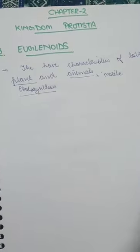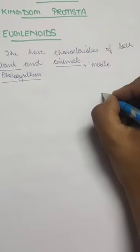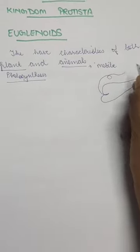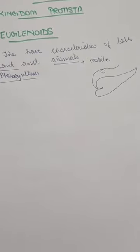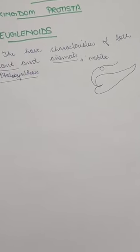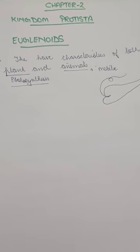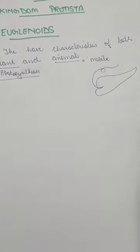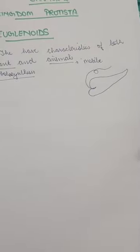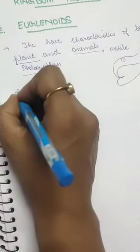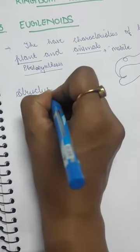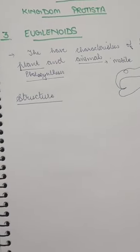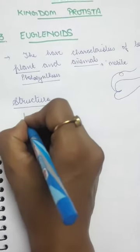The shape of the euglena is somewhat elongated and it has a flagella. This flagella helps the euglena to move, because these are mobile organisms. They have a shape-changing motion which is called metaboly. They have a flagella as a special organelle, and they don't have a cell wall — unlike chrysophytes and dinoflagellates which do have cell walls.